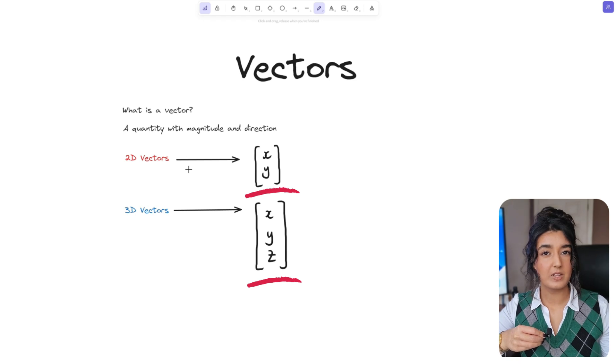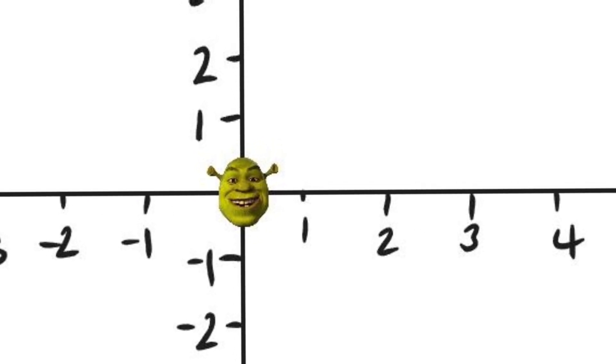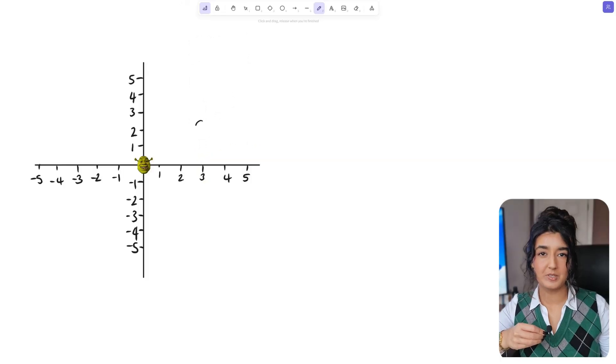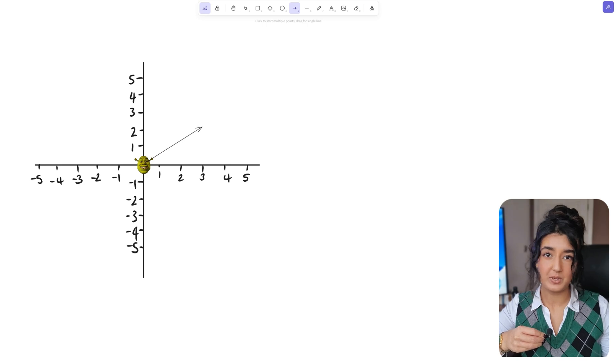To see how they're useful let's take a look at this graph. Here we have Shrek. Now say we want to move Shrek to this new position here. If we draw an arrow starting from his start position to the new desired position we have a vector.